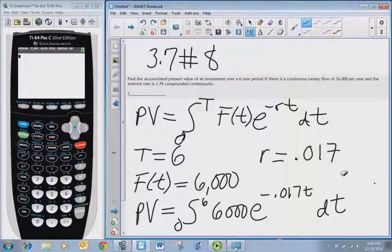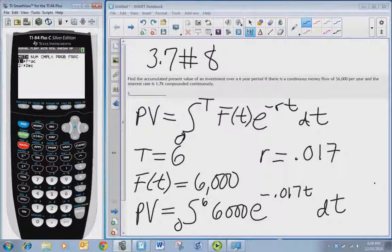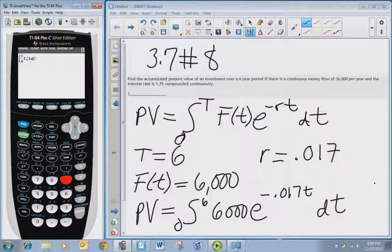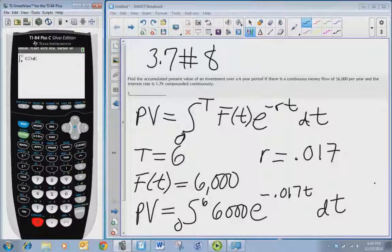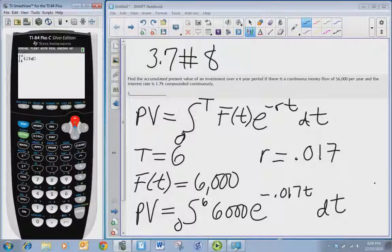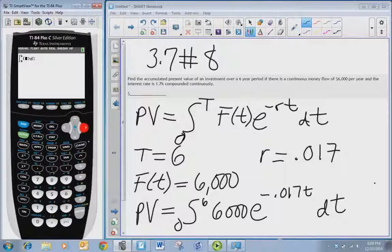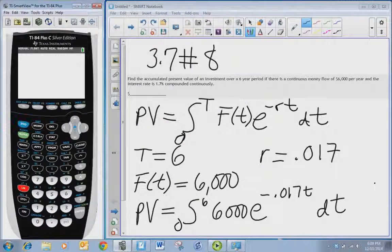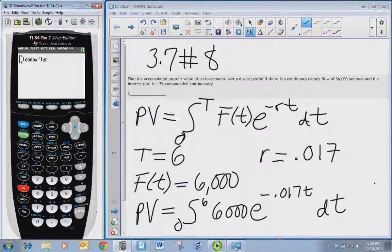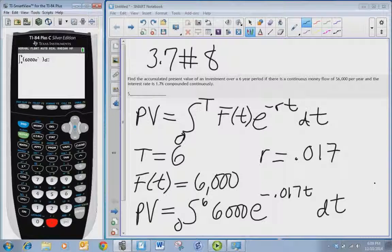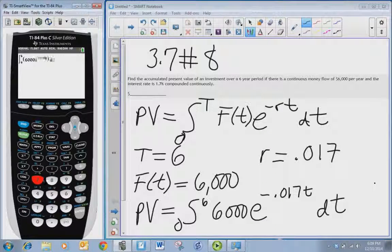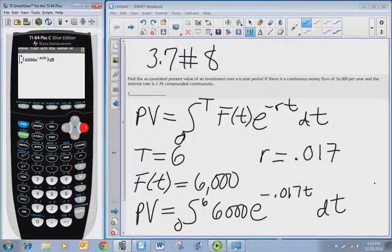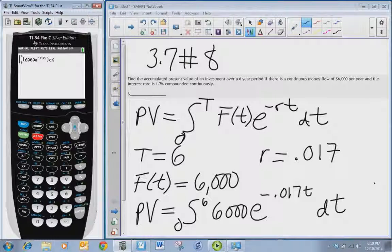Now I don't need you to solve this by hand so we'll go over on the calculator, go to math 9. Now yours might look a little different depending on the version of calculator you have, but for this one you just put in enter the values and use the arrow keys to move around. So zero to six, and then in here we want to put six thousand, do second ln for the e function, and then for the exponent you need negative point zero one seven x. And then arrow to the right twice to put an x for the dx, and then we hit enter.